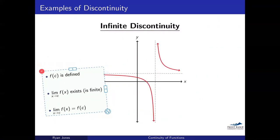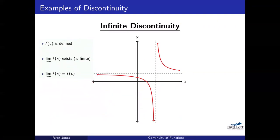For the infinite discontinuity, things are bad all over. f(c) is not even defined — there's no y value associated with x equals c. Even more so, the limit doesn't work: approaching c from the left gives negative infinity, and from the right gives positive infinity. Those left and right sided limits are different, so the limit doesn't even exist. We don't need to check the third condition — the function isn't defined and the limit doesn't exist.